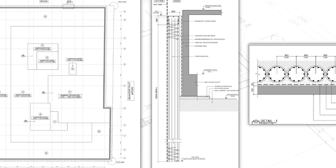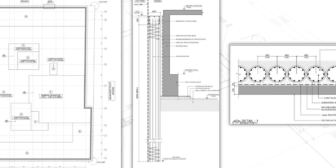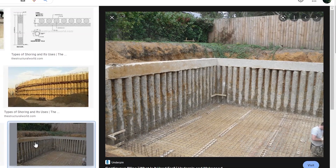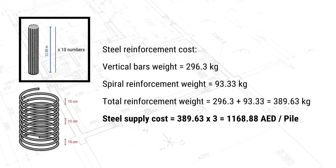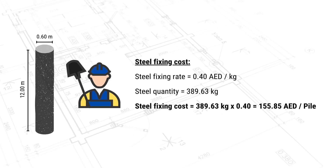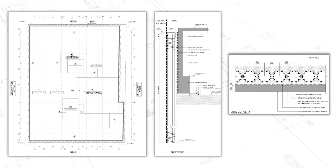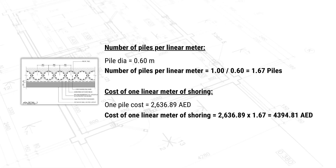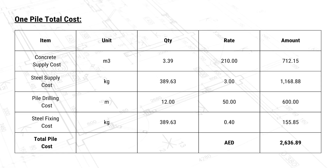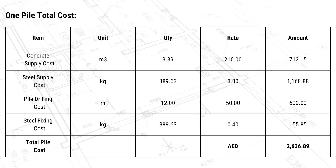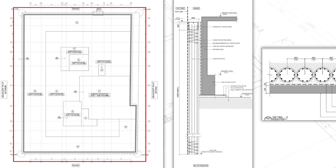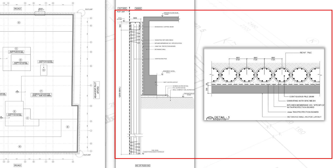In this video I'll show you how to estimate the cost of a contiguous pile shoring system, including how to calculate the quantities of the required concrete, steel, drilling, and manpower. This will be a good exercise as it introduces us to enabling and piling works. Here we have an enabling work package consisting of a contiguous pile shoring system, which is piles next to each other as you can see in this detail and sectional elevation.